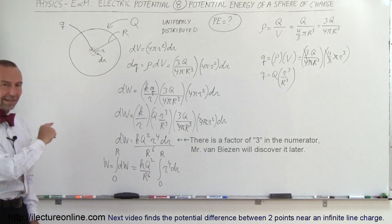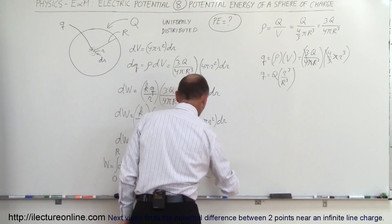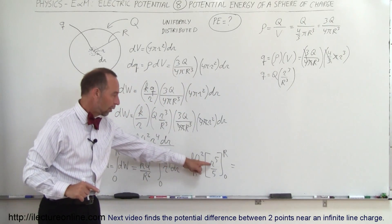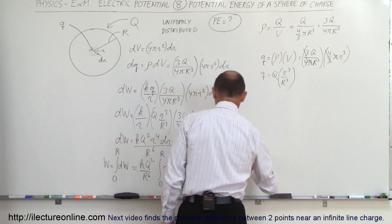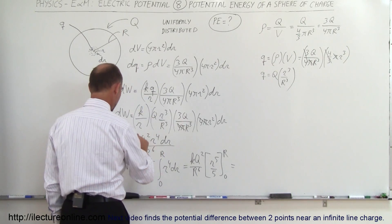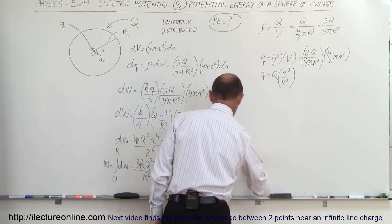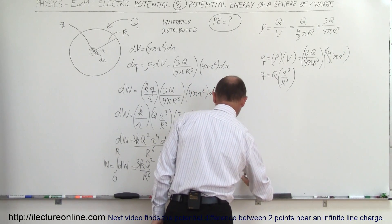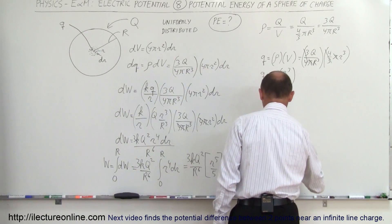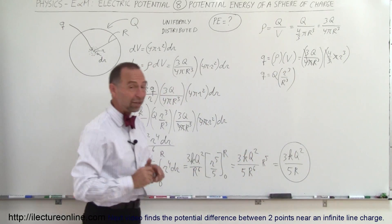Evaluating the integral: ∫r⁴ dr = r⁵/5, evaluated from 0 to R. Plugging in the upper limit gives R⁵; the lower limit contributes nothing. So W = (3kQ² / R⁶) · (R⁵ / 5). The R's simplify — R⁵ over R⁶ gives 1/R — and the total energy stored is W = 3kQ² / 5R.